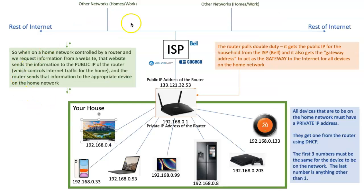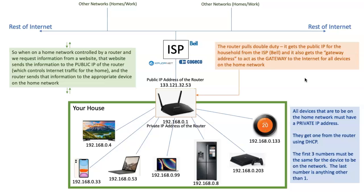Hopefully that explains the basics of how a home network is set up — how a router is so important in defining your network, giving everything access to the internet, and protecting you. A router does an awful lot. Later, we'll talk more about how exactly you secure a network better, because cybersecurity and network safety is an entire topic unto itself, which is growing all the time due to the rise in cybercrime. I hope that explained a lot — if you have any questions, you know what to do.